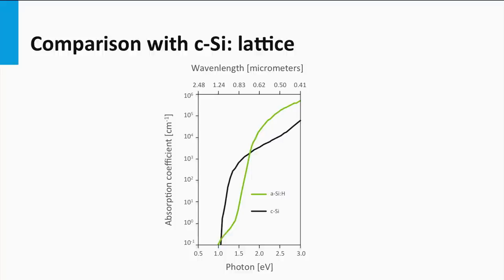This is demonstrated in the next graph, where the absorption coefficient is plotted versus the photon energy in electron volts. The black line represents crystalline silicon and the green line represents amorphous silicon. The absorption coefficient for amorphous silicon is much larger in the visible spectrum — up to two orders of magnitude — which means that much thinner silicon films can be used compared to the typical wafers in crystalline silicon solar cells. The red line represents amorphous silicon germanium, which has a lower bandgap and a much higher absorption coefficient in the visible.